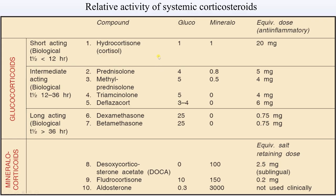Here you can see relative activity of systemic corticosteroids. Glucocorticoids: short-acting with half-life less than 12 hours, e.g., hydrocortisone; intermediate-acting with biological half-life 12 to 36 hours, e.g., prednisolone, methylprednisolone, triamcinolone, and deflasacort; long-acting with biological half-life more than 36 hours, e.g., dexamethasone and betamethasone. Their gluco- and mineralocorticoid activities and equivalent anti-inflammatory doses are shown. Mineralocorticoids include desoxycorticosterone acetate, fludrocortisone and aldosterone, with their respective gluco- and mineralocorticoid activities and equivalent salt-retaining doses.